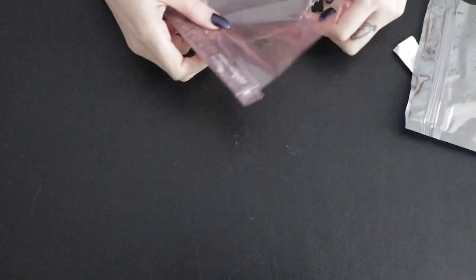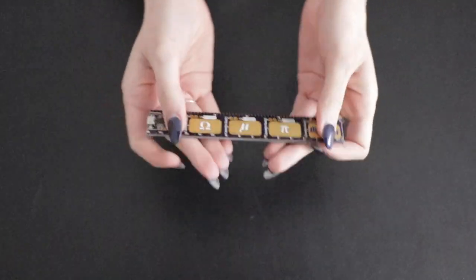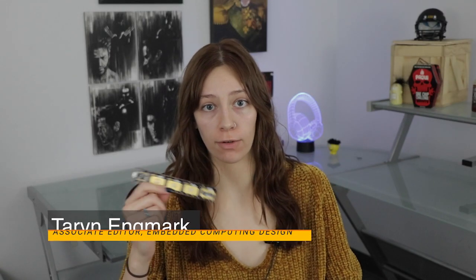This week on DevKit Weekly, we're going to be reviewing and raffling the Adafruit Pi Ruler Engineer Reference Ruler. The Pi Ruler is a fully featured microcontroller board from Adafruit that doubles as a 6-inch long PCB reference ruler. The board also includes four programmable capacitive touch buttons with corresponding LEDs that you can use to create anything from a Simon game to panic buttons for video calls.